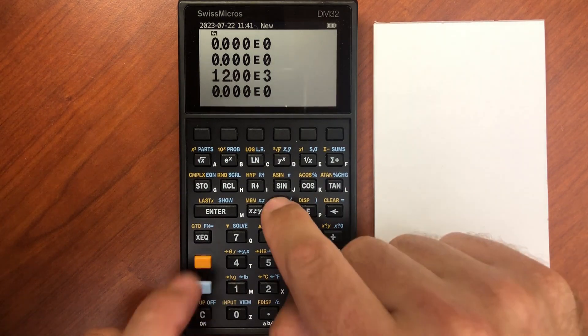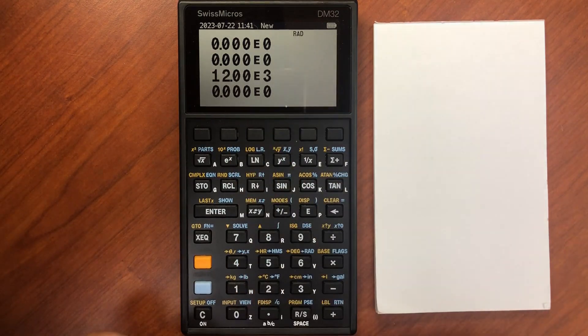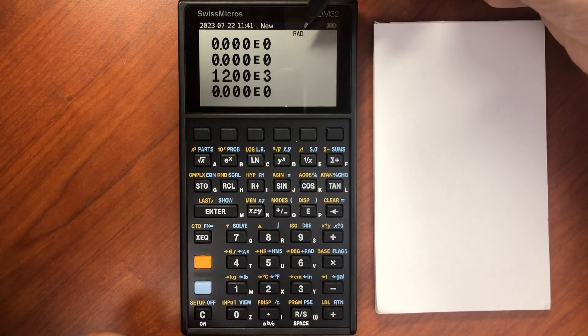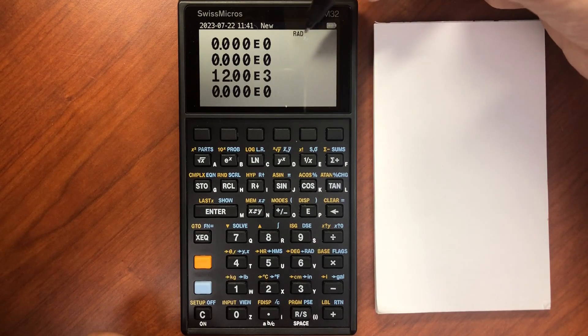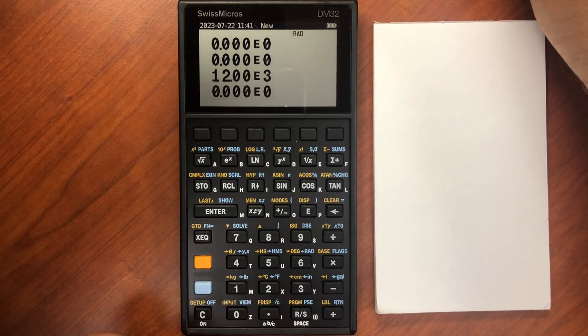Now if I was in radian mode, notice I get the little indicator here that says I'm in radians. If I'm in degree mode, nothing shows. But I'm in radian mode,